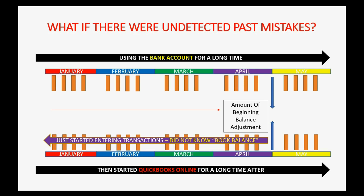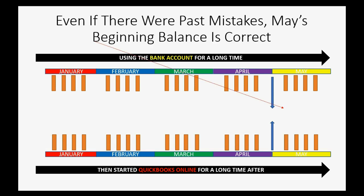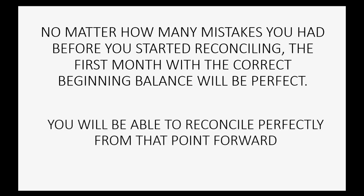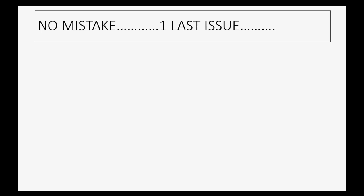But then the question arises: what if there were undetected past mistakes? Well, even if there were past mistakes, May's beginning balance will be correct if you follow this method. No matter how many mistakes you had before you started reconciling, the first month with the correct beginning balance will be perfect. You will be able to reconcile perfectly from that point forward into the future. But there is one last issue, even if there are no past mistakes.